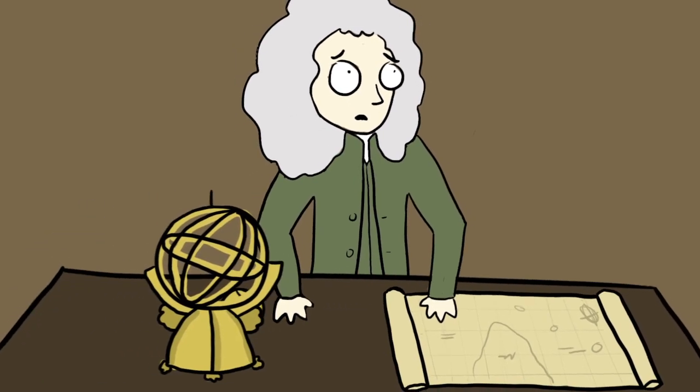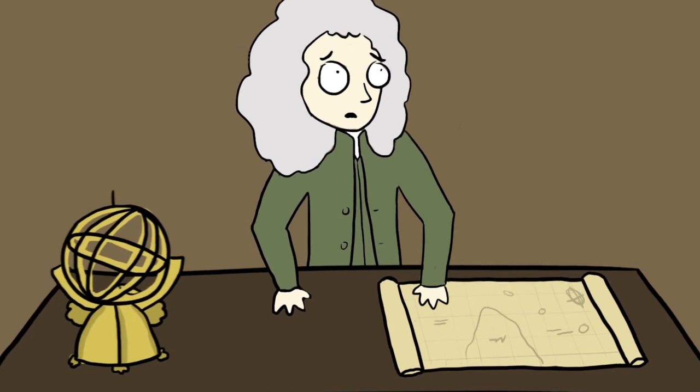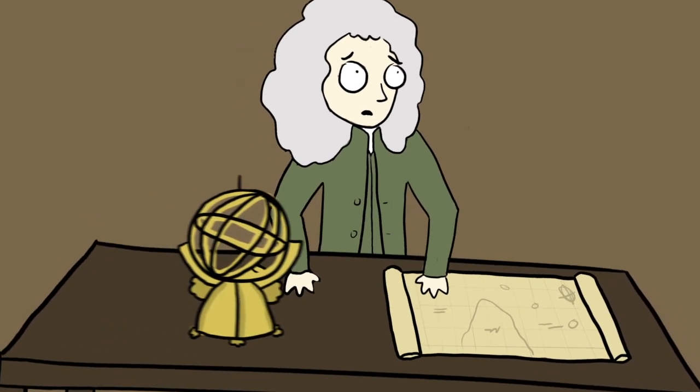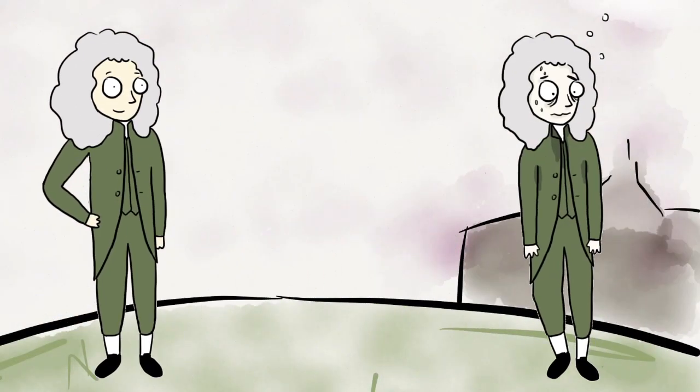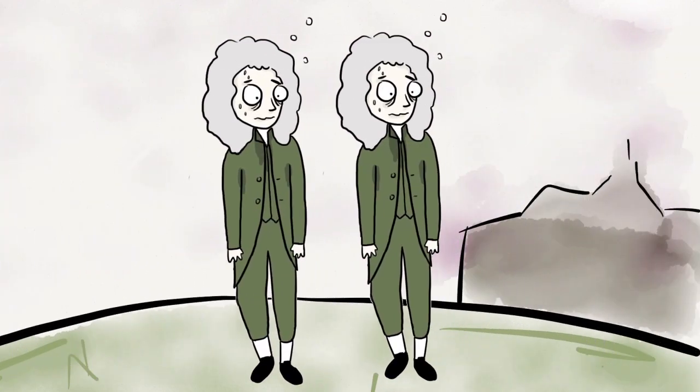Le Gentil did observe the event, but his measurements, made from the deck of a ship at sea, were useless. He returned to the Isle de France in late June, where he acquired a kind of food poisoning that caused double vision.